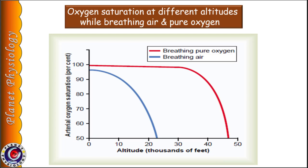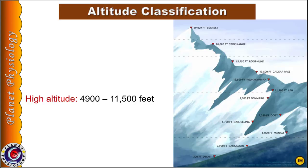Let us first see altitude classification. The onset of physiologic effects of hypoxia starts above 4,900 feet, and hence from 4,900 to 11,500 feet is considered as high altitude. High altitude sickness is commonly observed if the person ascends rapidly to 8,000 feet or above.